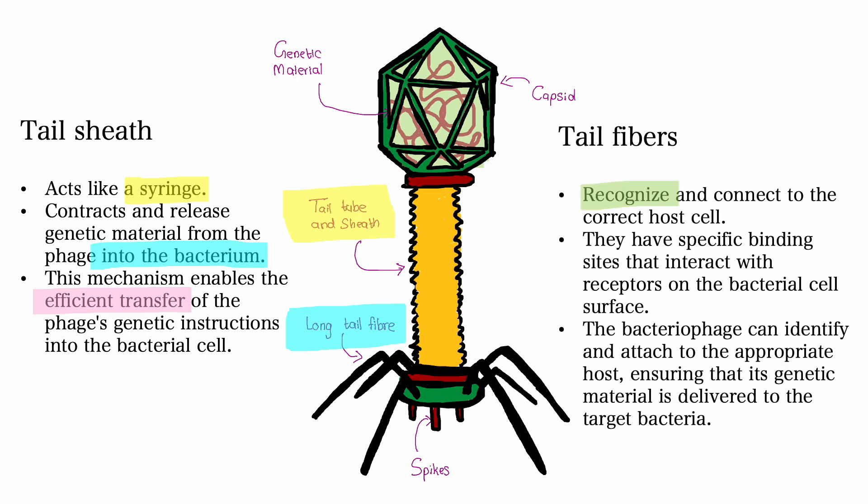The tail fibers of the bacteriophage have a significant function in recognizing and connecting to the correct host cell. The fibers have specific binding sites that interact with receptors on the bacterial cell surface. Through this recognition process, bacteriophages can identify and attach to the appropriate host, ensuring that their genetic material is delivered to the right target bacteria.